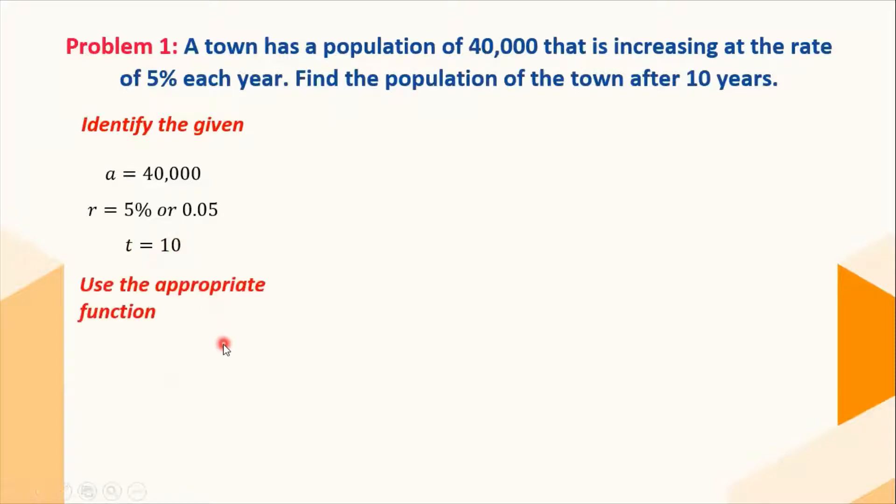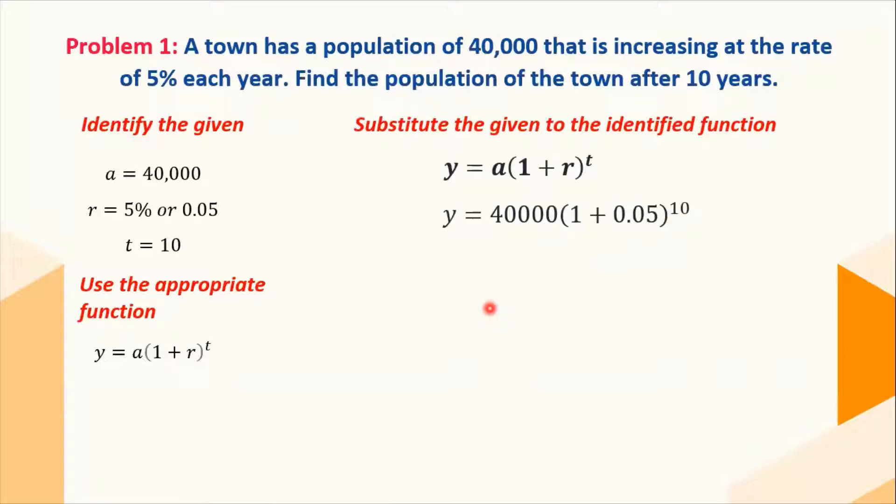Next, we will use the appropriate function. We will be using y equals a times the quantity 1 plus r raised to the power of t. Let's substitute the given to the identified function. We have here y equals 40,000 times the quantity 1 plus 0.05 raised to the power of 10.